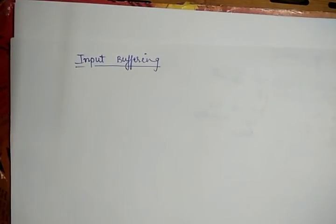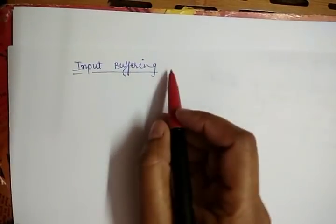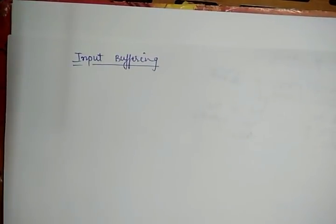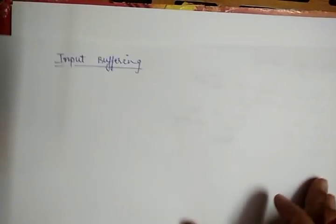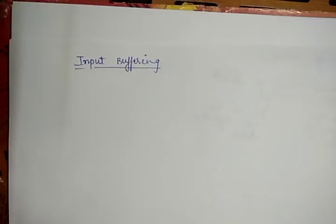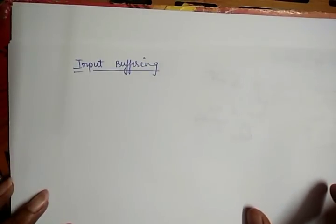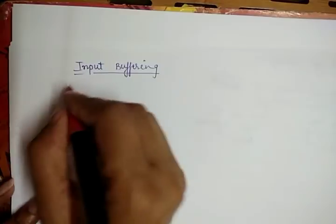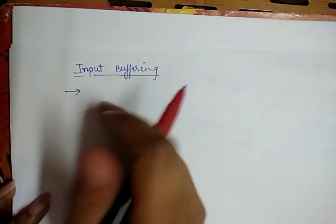The next topic of discussion is input buffering in the lexical analyzer. As we already discussed in the previous lecture, the lexical analyzer reads the source code line by line or character by character from left to right. So we place the source code into a buffer. The lexical analyzer scans the input from left to right, one character at a time.